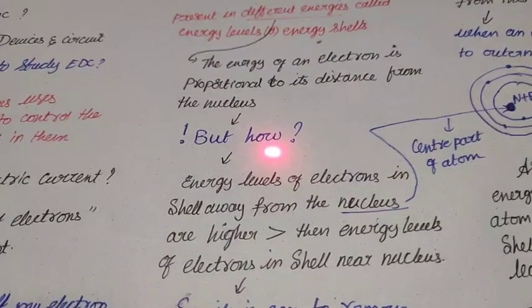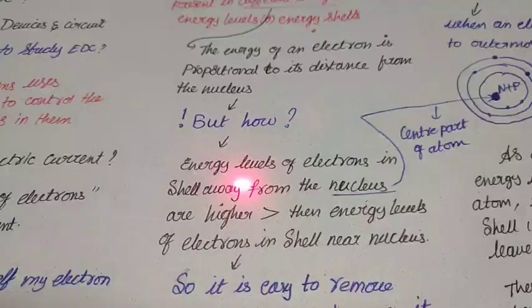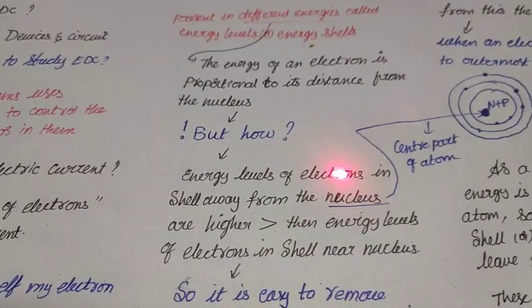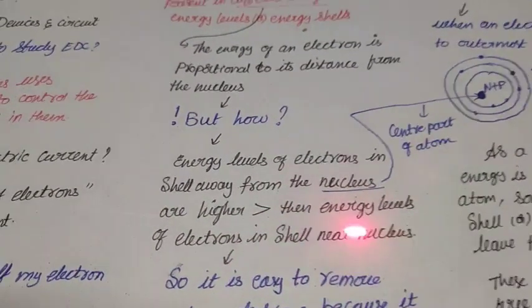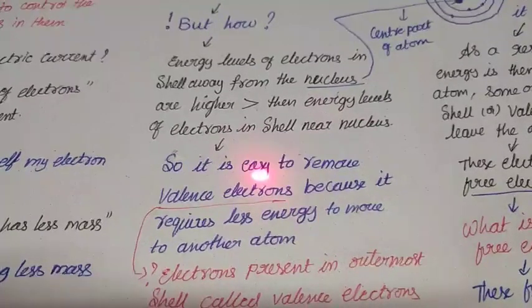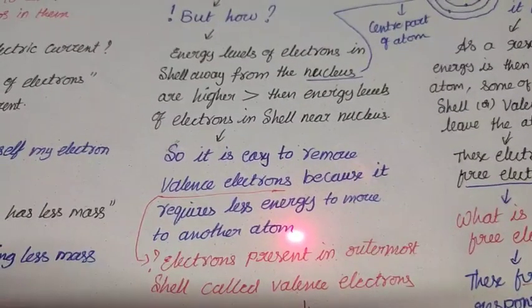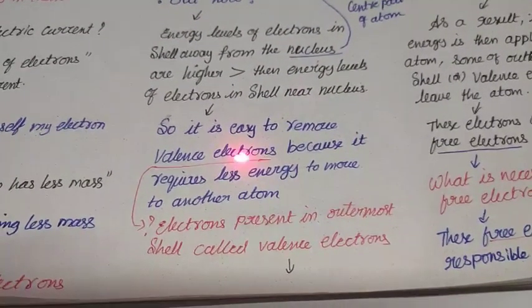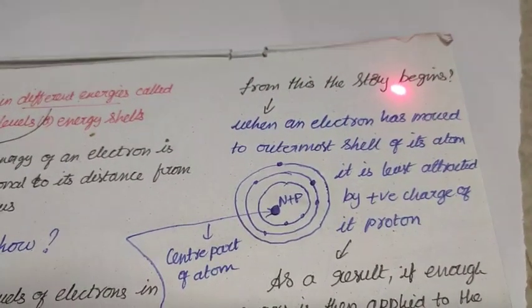Let's see. The energy of an electron is proportional to its distance from nucleus. I said different energies, which means the energy of electron is proportional to its distance from the nucleus. The distance from the nucleus determines the energy of the electron. But how? Don't simply learn it, ask yourself so that we can gain knowledge. Energy levels of electrons in shells away from the nucleus are higher. This means new shells having far from the nucleus have higher energy than the energy level of electrons in shells near nucleus.